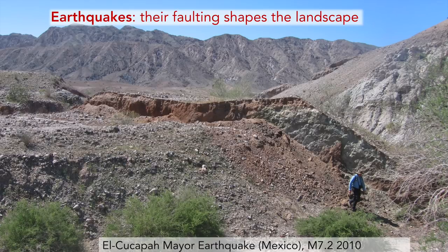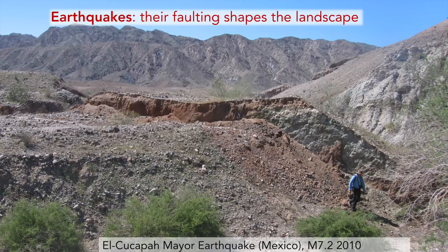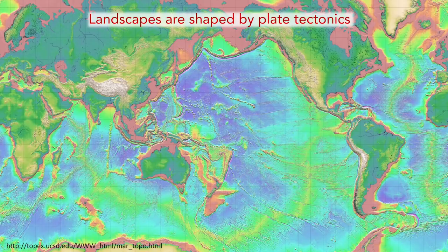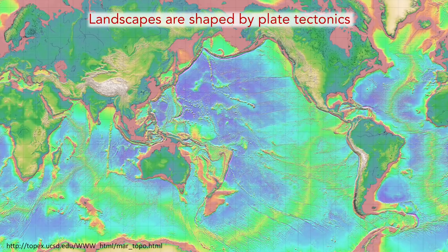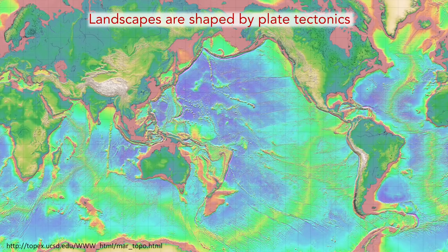Earthquakes are also the way that the Earth forms landscapes. This is a photo from 2010, another big earthquake in Southern California. You can see a very nice fresh fault scarp that hasn't been eroded yet, with a geologist for scale. If you look at the hills behind, you start understanding that earthquakes are the cause of the building of the landscape around us. Most of the topography we see on Earth is due to earthquakes.